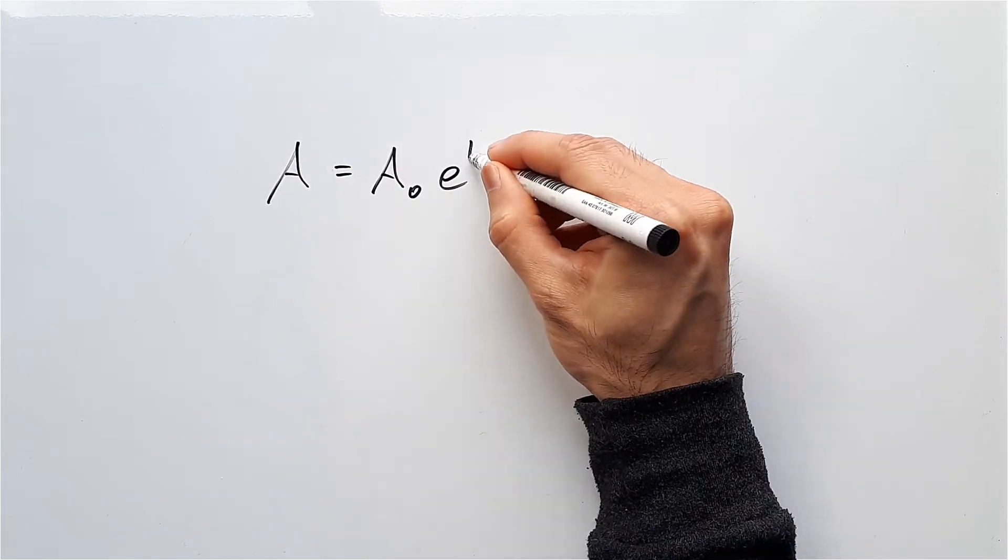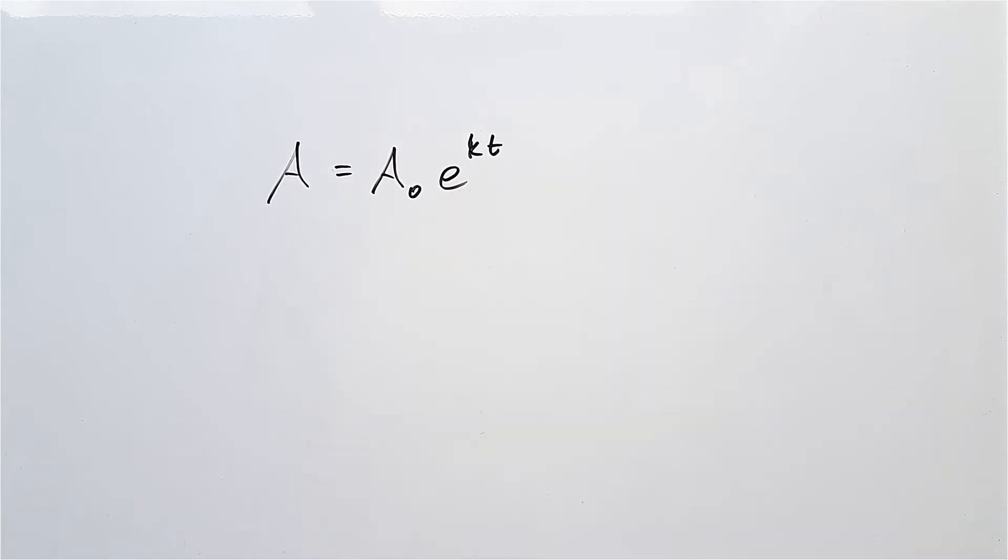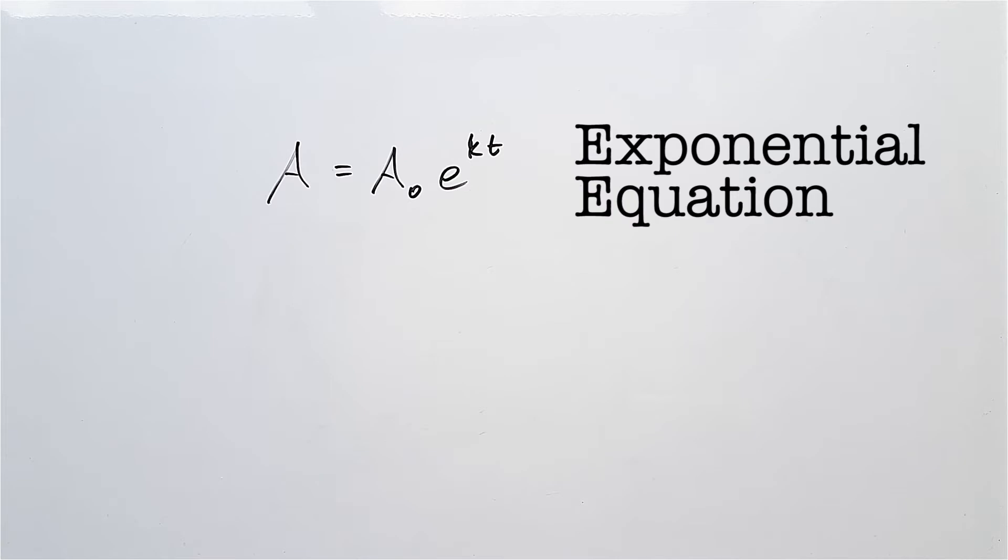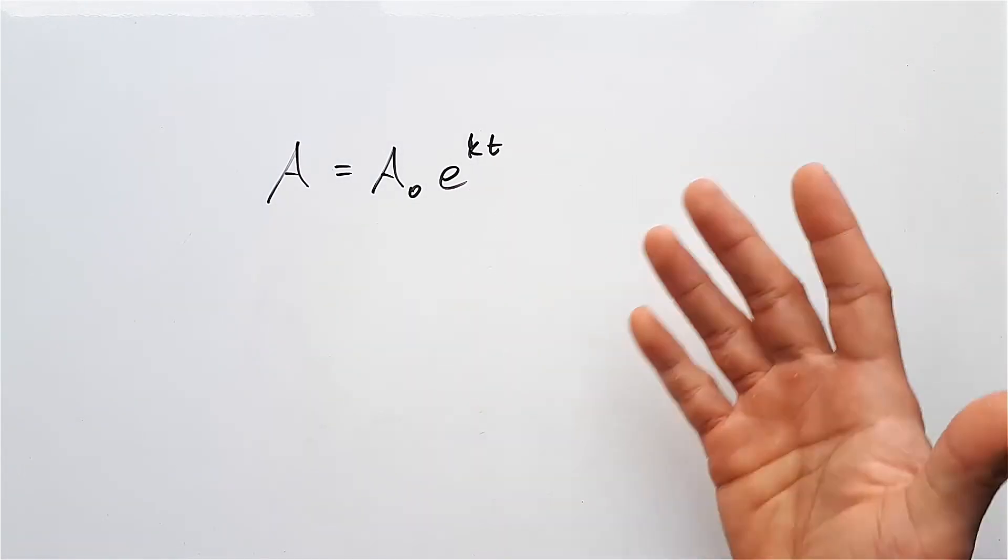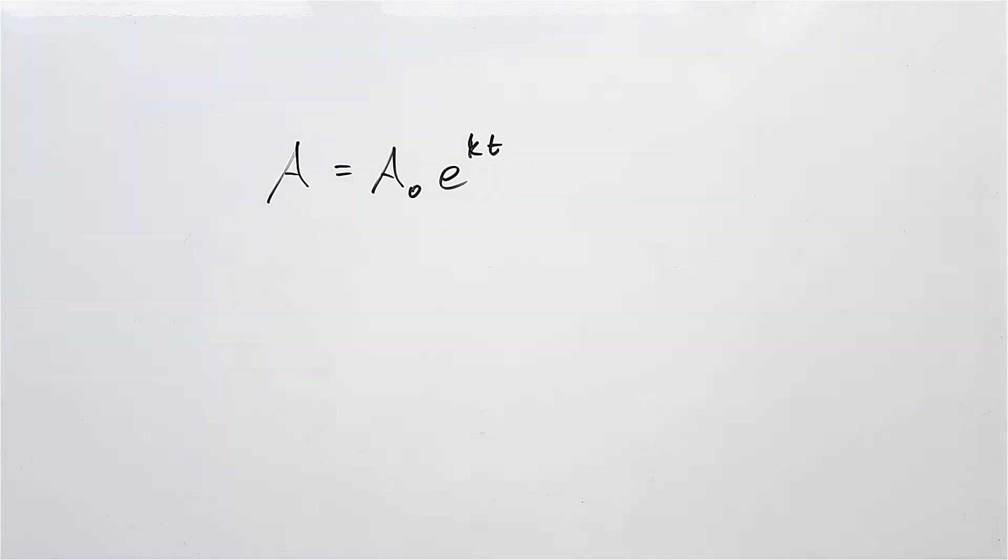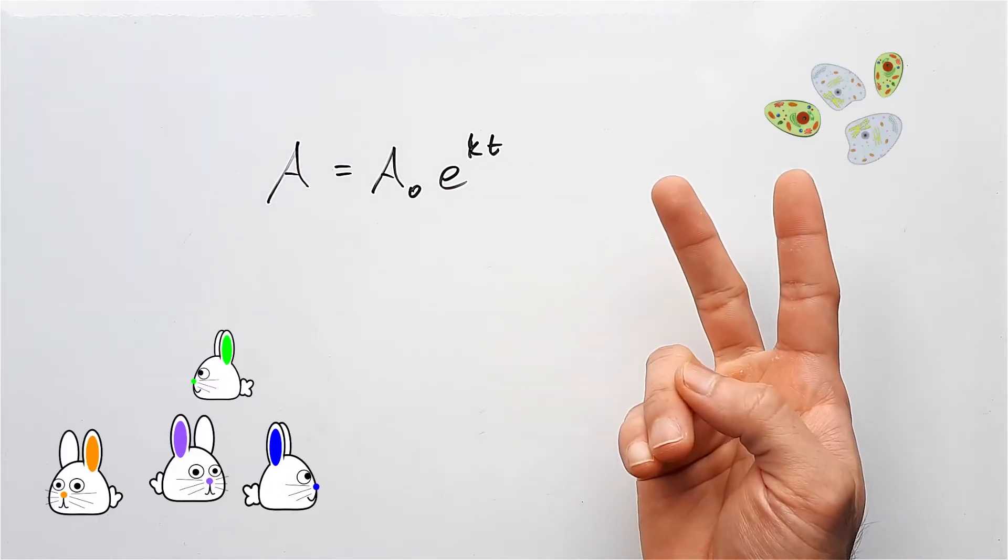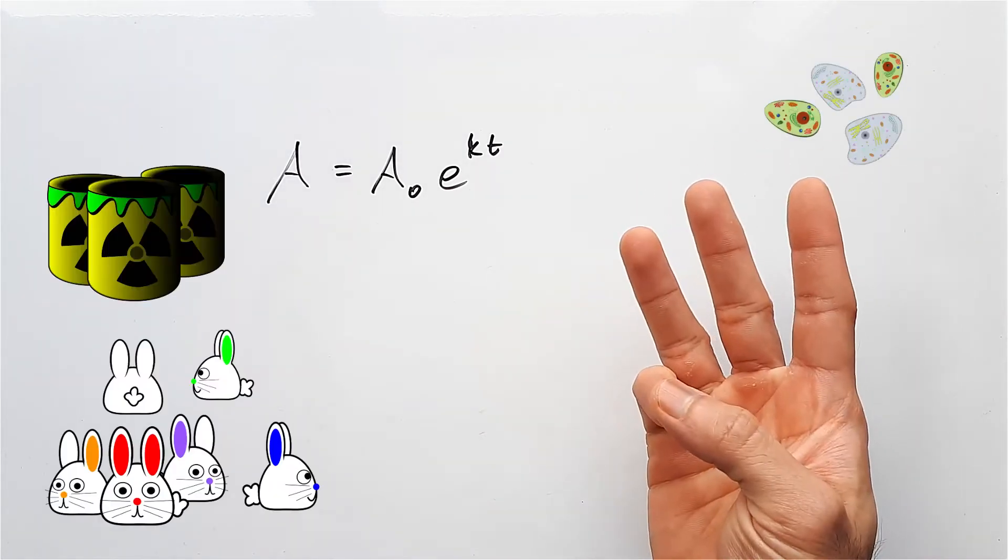A equals A0 times e to the power of k times t. This is known as the exponential equation. We use this in situations where things increase exponentially or decrease exponentially, such as population growth, cell generation, and radioactive decay.